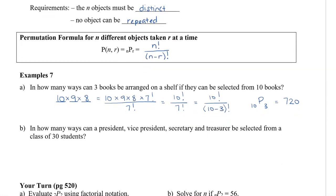Let's take a look at another one. In how many ways can a president, vice president, secretary, and treasurer be selected from a class of 30 students? We have to assume here that all of these positions are different, so the order is different. If I wanted to do this without the permutation formula, we would say this is 30 times 29 times 28 times 27.